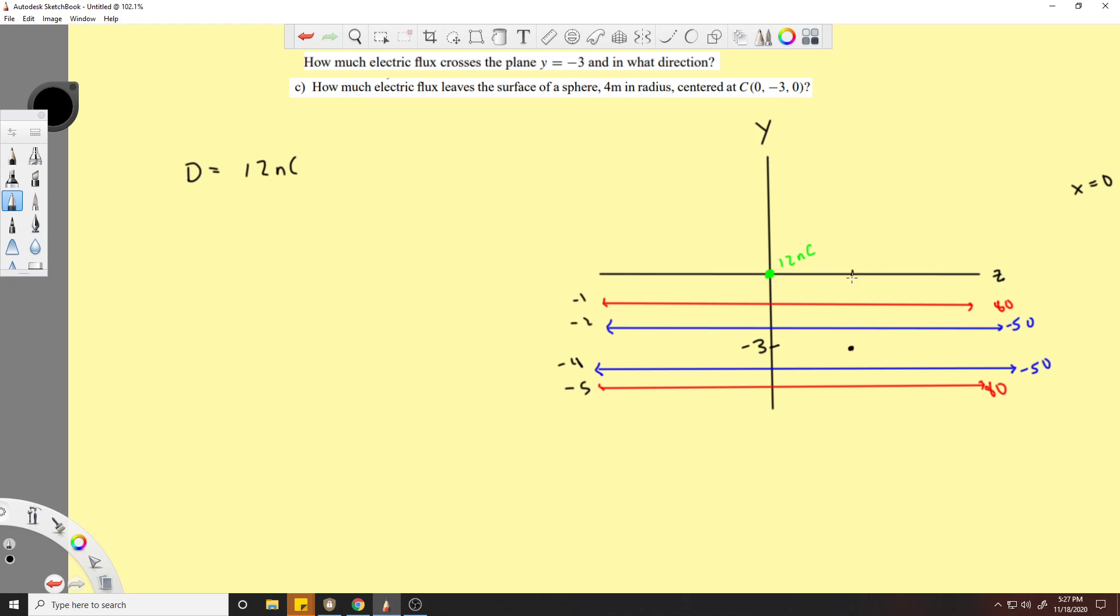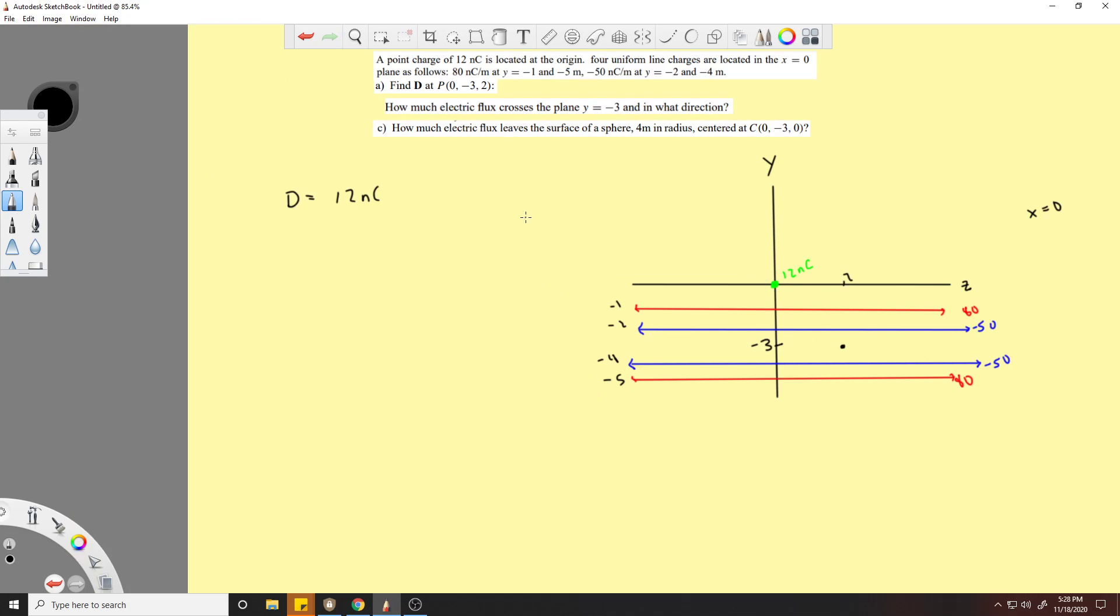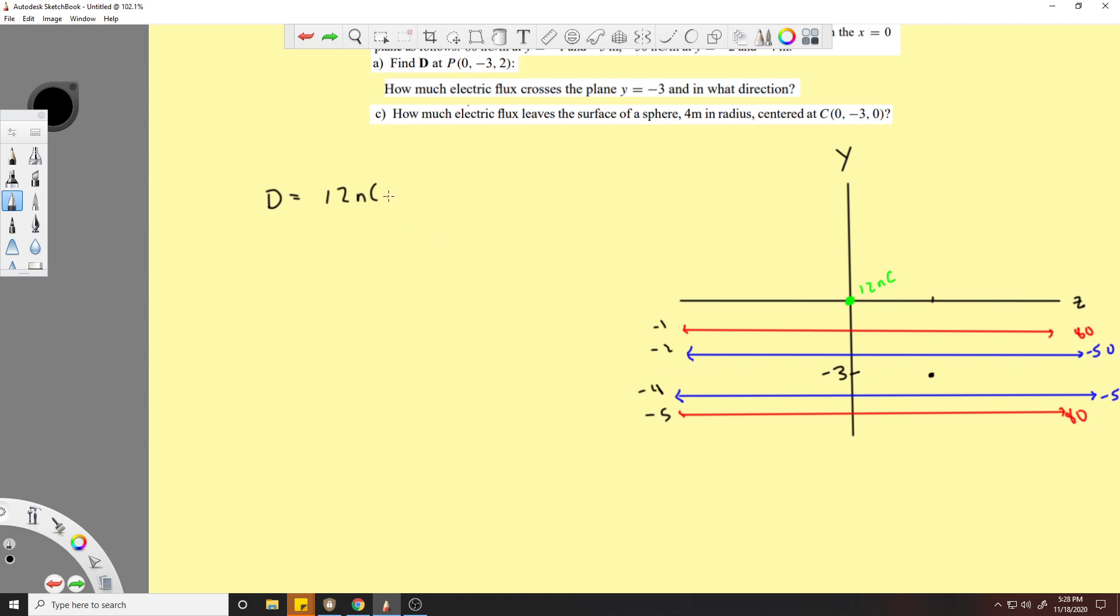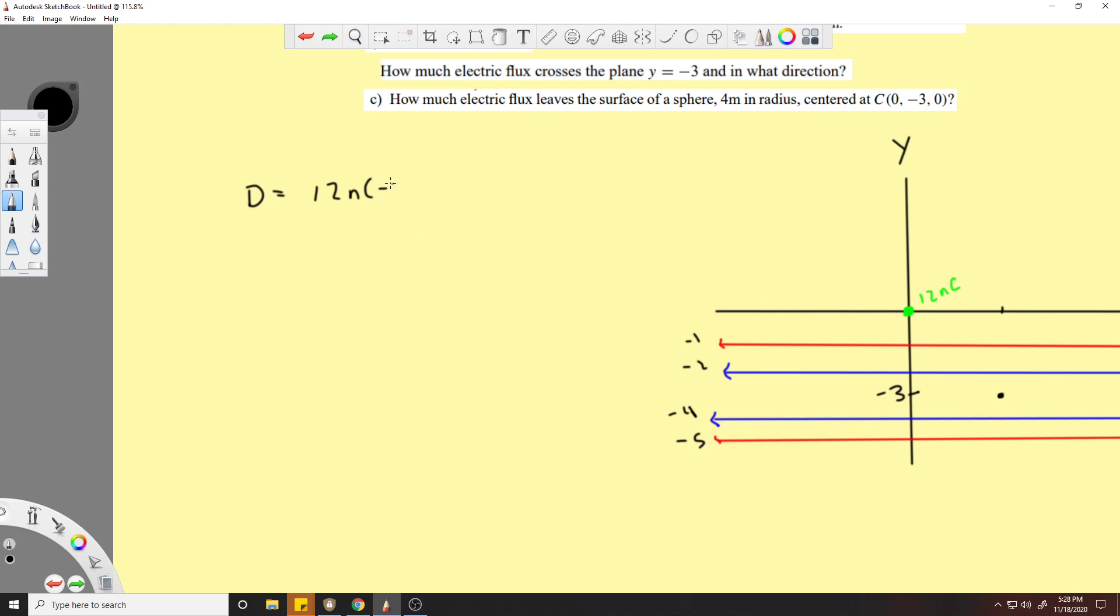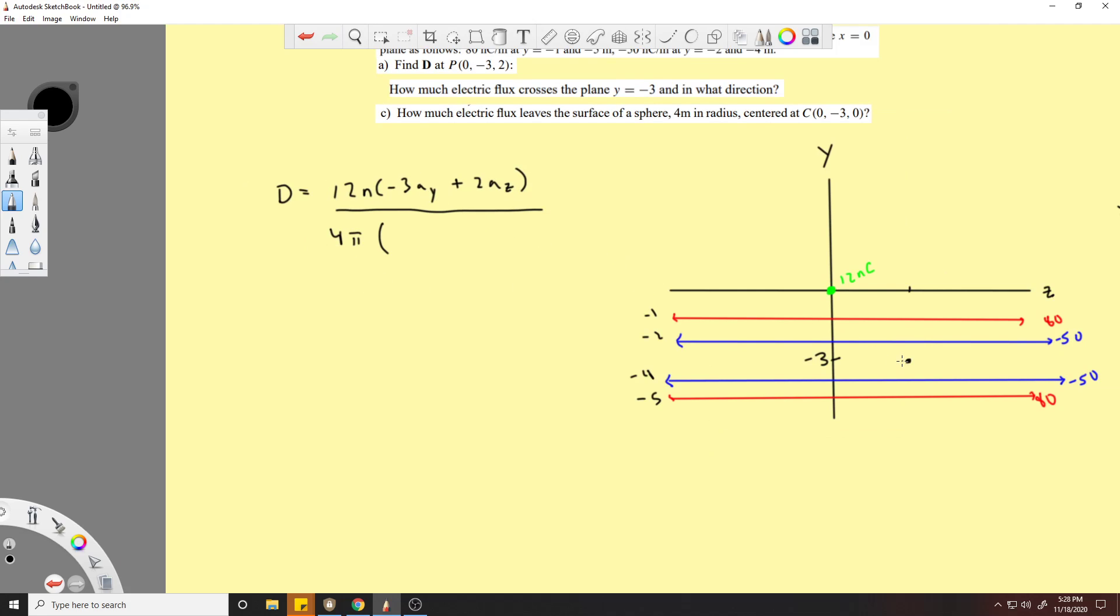Units of z. So we have negative 3 a_y plus 2 a_z over 4 pi times the distance r. It's going to be 12 nanocoulombs times its unit vector, which is going to be r over the value, and then this is going to be 4 pi r. So now we'll fill all this in.